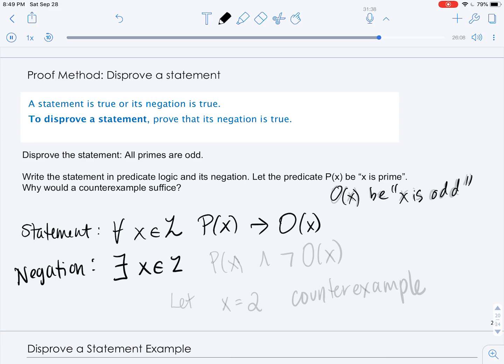x is still an integer. And when we negate an implication, we keep the premise with P(x) and we negate the conclusion, not O(x). So in English, the negation is there exists an integer that is prime and even.